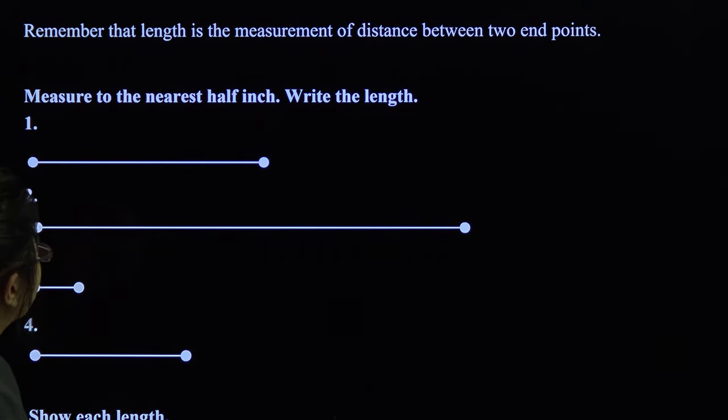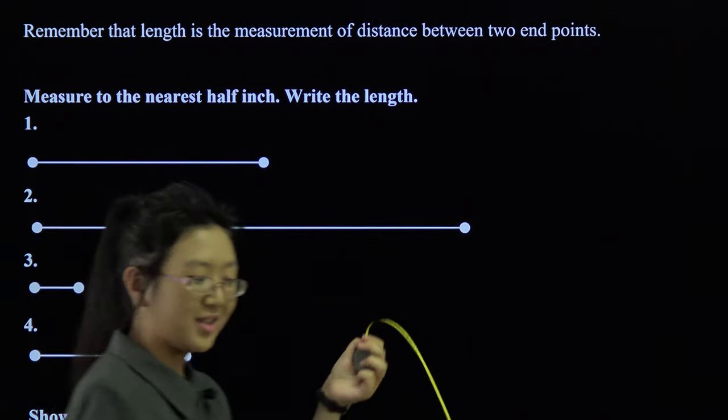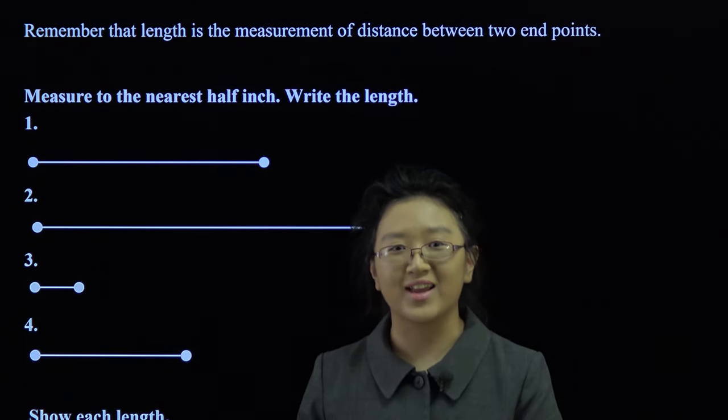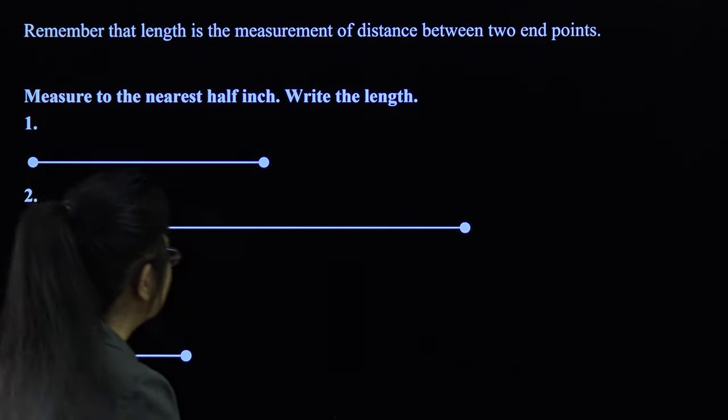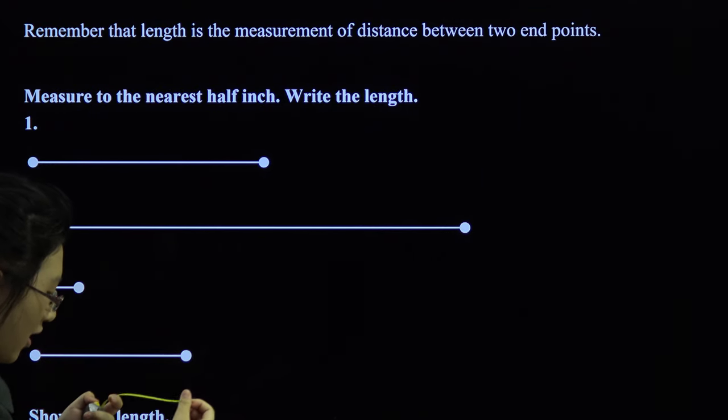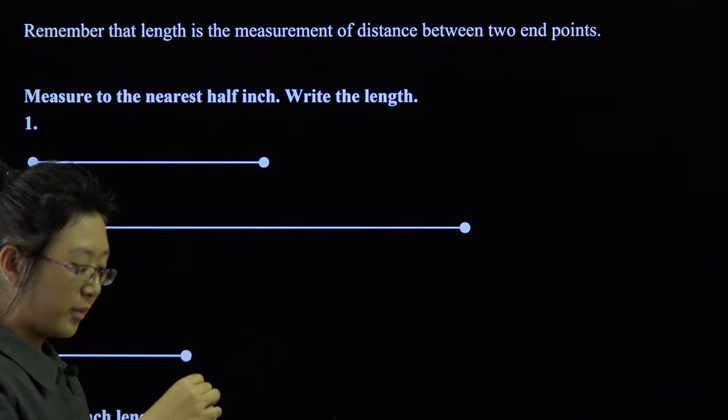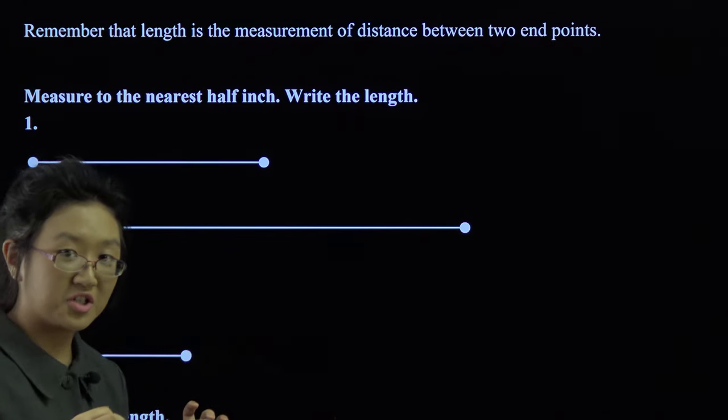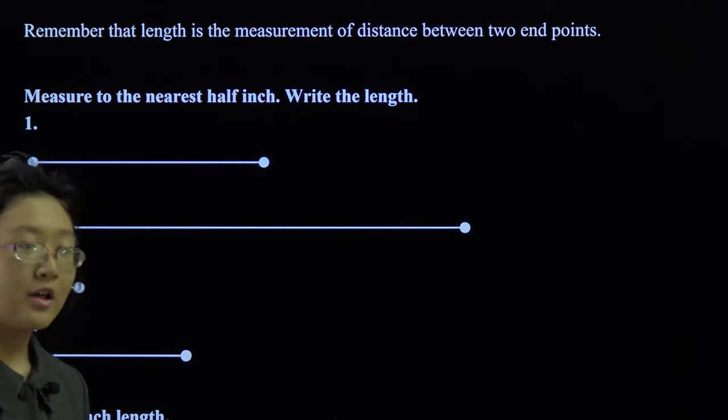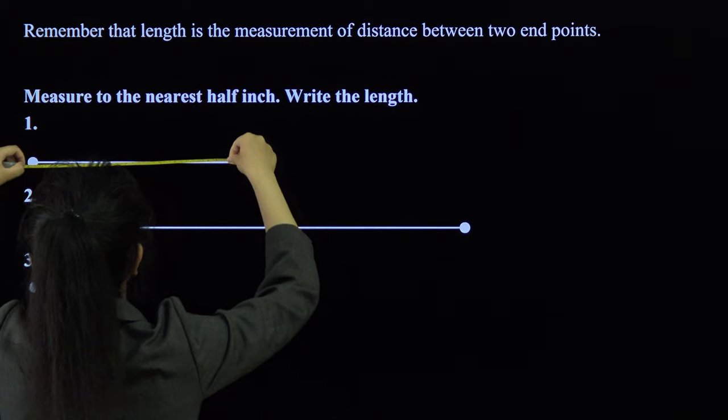Measure to the nearest half inch. Write the length. Okay guys, when you're actually measuring, don't use one of these rulers unless you have adult supervision. Because these rulers, they retract very quickly. And they are very sharp. And I almost cut myself. This is a small ruler and it's not that hard, so it's not actually that easy to cut yourself on this one. But most of these types of rulers, the tape measures, they're sharp. They're fast. They're strong. They will cut you. You will feel pain. Don't use them without adult supervision.